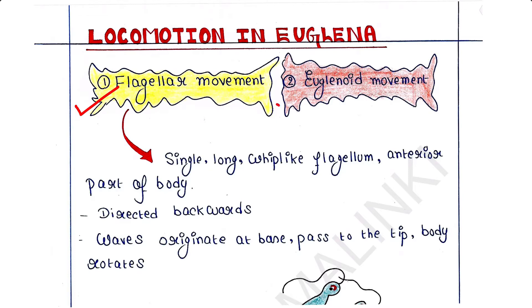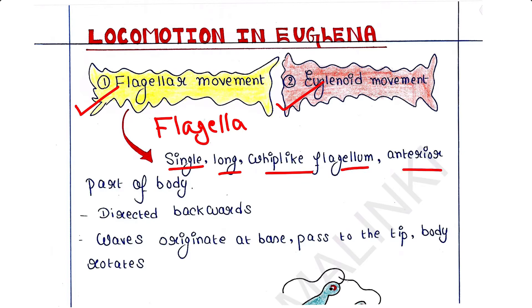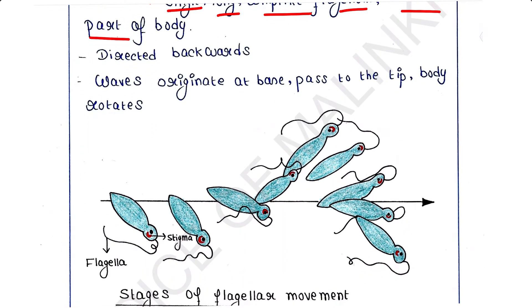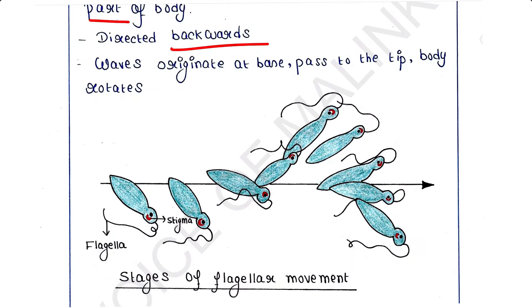First we will talk about flagellar movement. The flagellum contributes to the movement of Euglena. Euglena contains a single long whip-like flagellum which arises from the anterior part of the cytoplasm of its body. During locomotion, the flagellum is directed backwards.